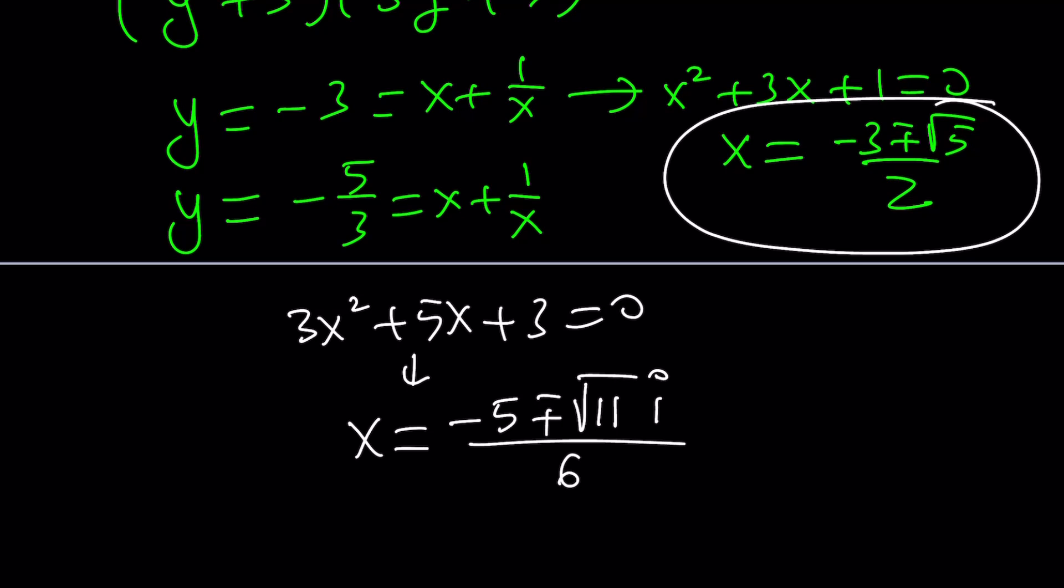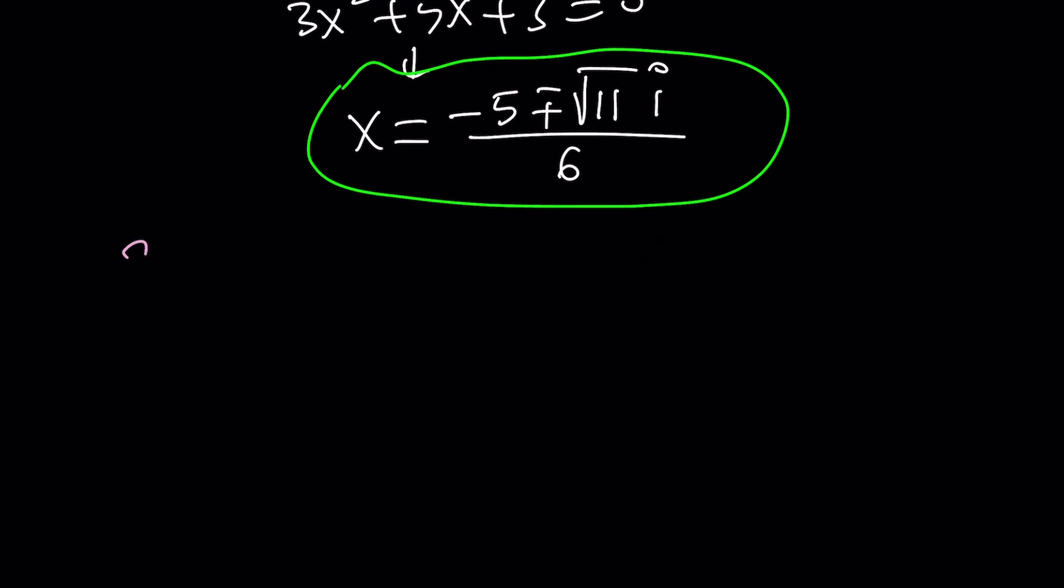And obviously, those are going to be non-real complex solutions. But this is a quartic. There are four solutions. Two of them are real. And then you're probably thinking, there must be an easy way to do this, right? But let's see if it's easier. So, here's the second method.